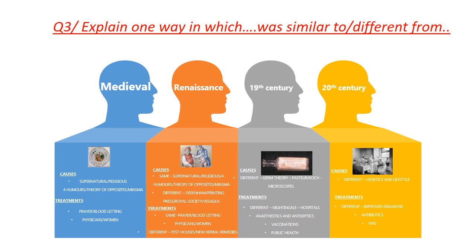That would be a very straightforward question. You just look on the list. In medieval times they believed disease was caused by supernatural religious reasons, and by the 19th century Pasteur had introduced germ theory. Just make sure you are 100% clear about causes and treatments for the four different time periods. Go back to my 13 to 1 playlist — there's a lot more detailed information there about each individual time period.